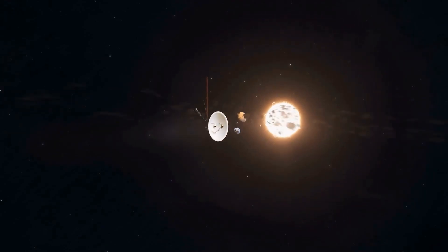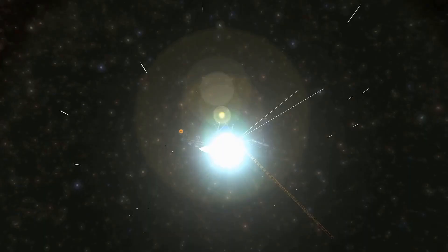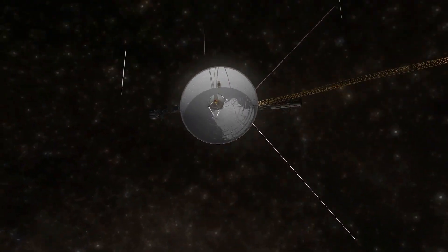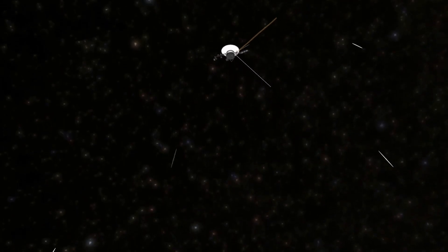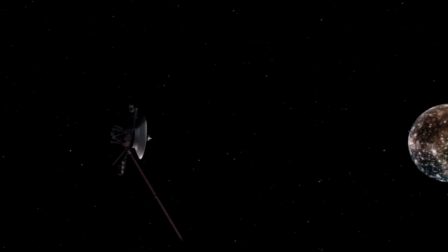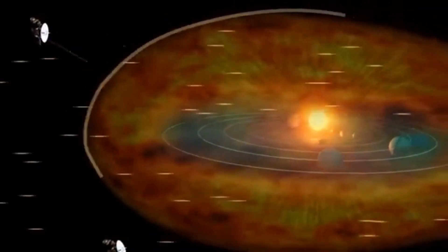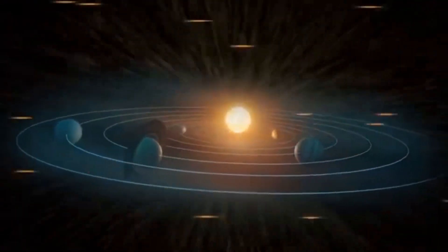In 2013, NASA made history when Voyager 1 officially entered interstellar space, a region beyond the protective influence of the Sun's magnetic field. Then, in 2018, Voyager 2 followed suit, crossing the heliopause, the boundary where our solar system ends, and the vast, mysterious interstellar medium begins.